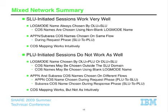So here's our summary. SLU-initiated sessions work really well. The log mode name was always chosen by the OLU equals SLU side no matter what network you're in, so cost names are always chosen using a non-blank log mode name rather than a blank one. The APPN and the separate class of service names are chosen on the same flow in the SLU-to-PLU direction, and that means the cost mapping works intuitively. PLU-initiated sessions do not work nearly as well. The log mode name chosen by the OLU or the DLU doesn't really matter, so sometimes class of service names have to be chosen outside the SLU domain, which means dynamic CDRC and typically no mode tab or D log mode. It also means that cost names may be chosen using a blank log mode name outside the SLU domain, which means you're picking the wrong log mode name, which resolves to the wrong APPN class of service name. The other problem is that APPN and separate cost names are chosen on different flows — APPN class of service on the request flow PLU-to-SLU, the separate cost name during the response phase SLU-to-PLU. Cost mapping kind of works, but not nearly as intuitively, and you have to do more setup to make sure things work correctly.